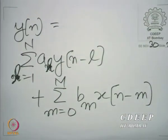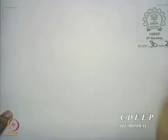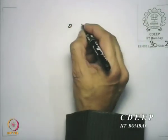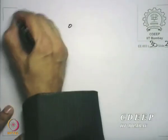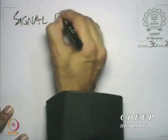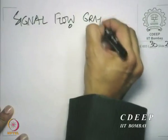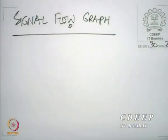Now, there is a very simple way in which we can create this system — we could use what is called a signal flow graph. A signal flow graph is a way of representing a realization. We have seen a little bit about signal flow graphs before, but we will now formally introduce signal flow graphs for this course.